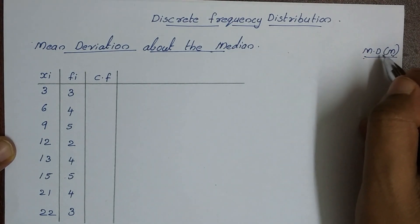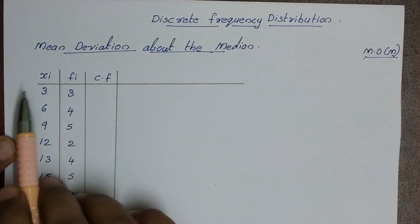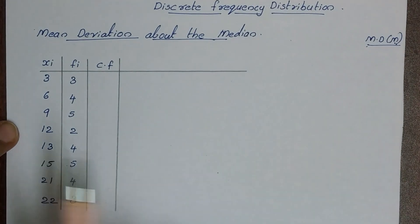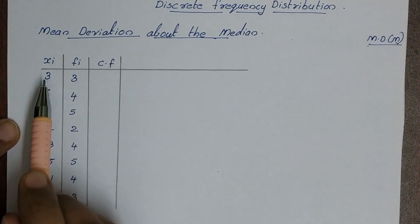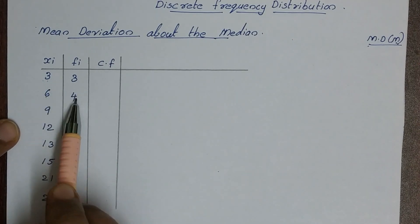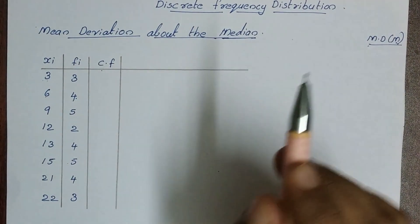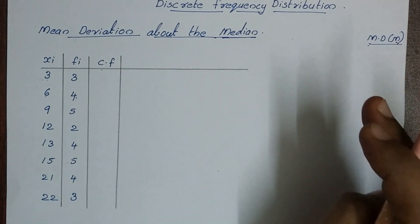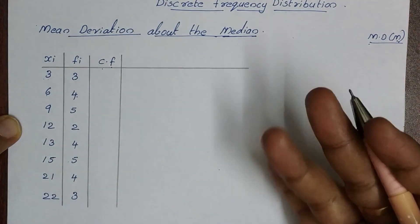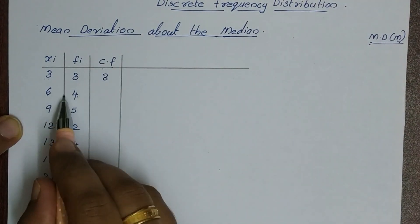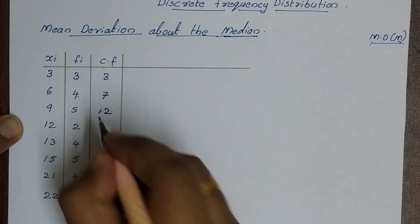We've written the median expression for each individual. Here we have a question. This is xi, this is fi — if it is discrete data. This is xi, corresponding marks: 3, 3, 3, 4, 4, 4. This is the cumulative frequency. We have to find the median, so we add: 3, then 3 plus 4 is 7, then 7 plus 5 is 12.